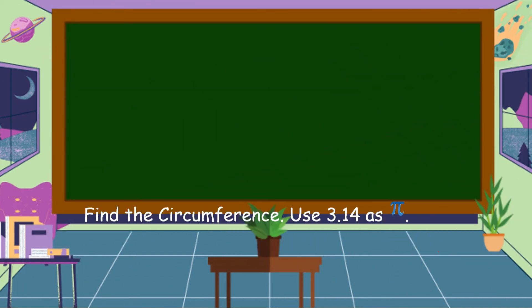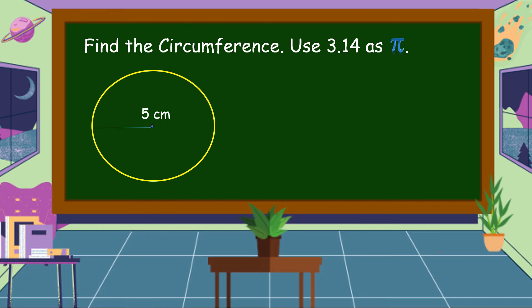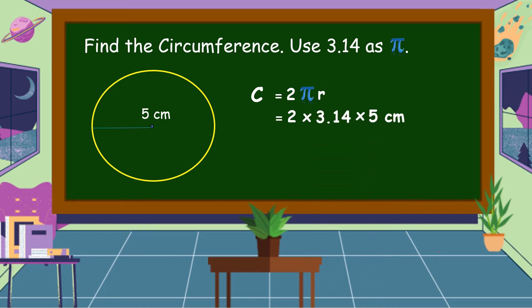Another example. Find the circumference. Use 3.14 as the value of pi. The radius of this circle is 5 centimeters. To find the circumference, we're going to use this formula: circumference is equal to 2 pi r. So let's substitute the value of pi and radius: 2 times 3.14 times 5 centimeters. 2 times 3.14 is equal to 6.28, times 5 centimeters.